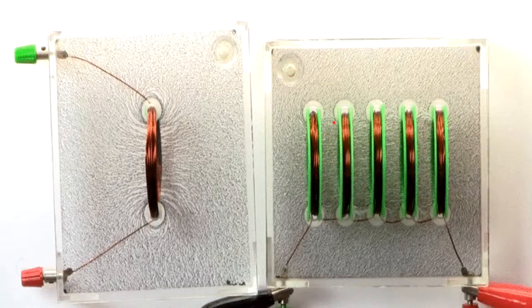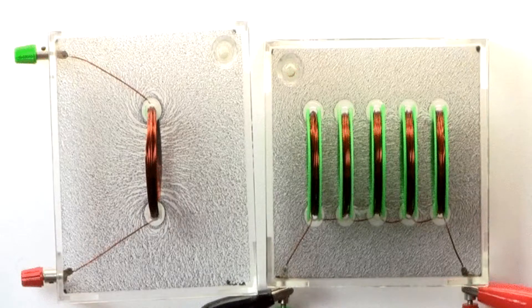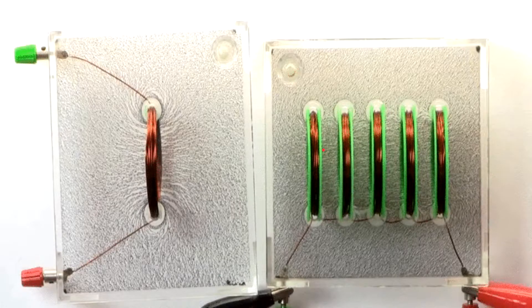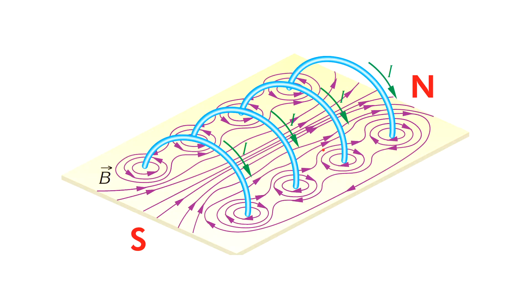Note that the magnetic field of a coil is similar to a loop. Inside the coil we have more uniform fields. The magnetic field lines diverge at one end and converge at the other end.